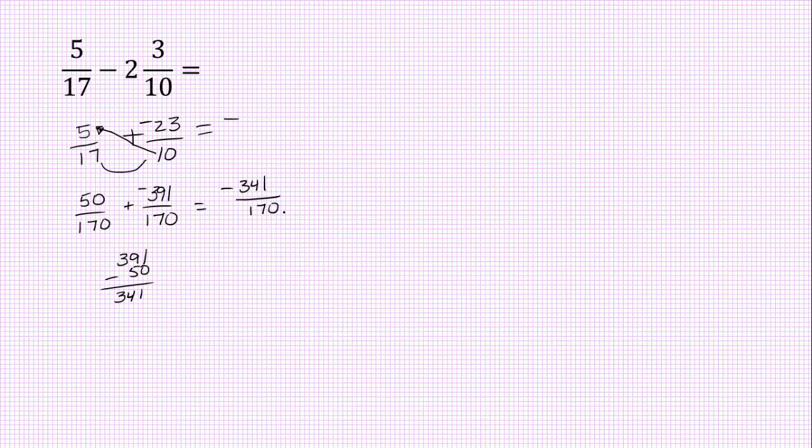We have negative 341 over 170 for our answer. Those don't share any common factors, so you can actually leave the answer the way it is. If you prefer mixed numbers, you can take it a step further and do the division. It goes in two times with one left over out of 170, so that's your other possible answer.